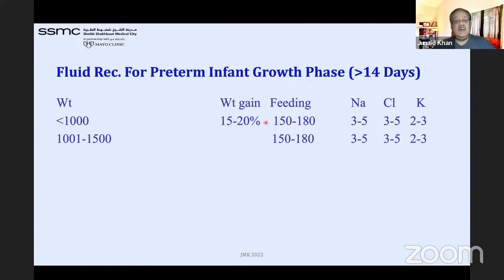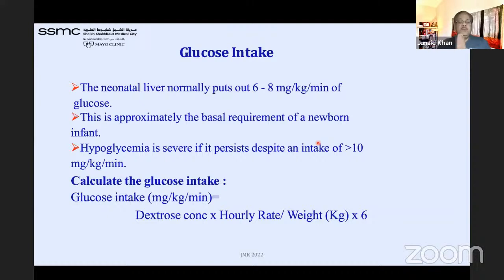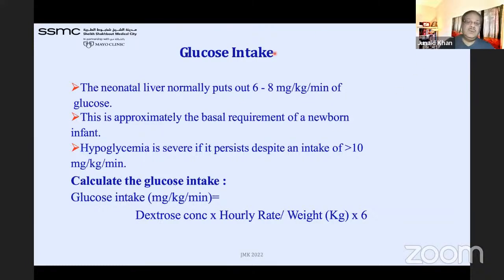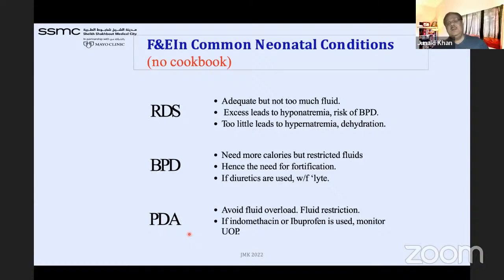After 14 days of life, weight gain should be 15–20 grams/kg/day. Total fluids are typically 150–180 ml/kg/day; we rarely go beyond 180, though up to 200 is possible. Regarding glucose: the usual glucose infusion rate is 6–8 mg/kg/min, with the formula: dextrose concentration × hourly rate ÷ (weight × 6). There is no cookbook — you must adjust according to each baby's needs.